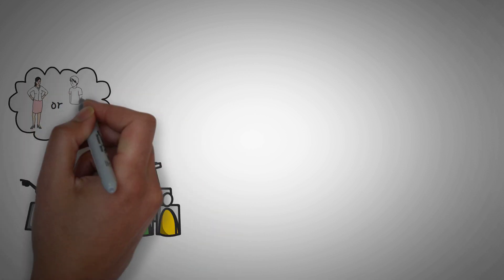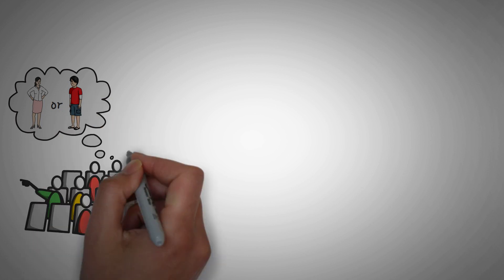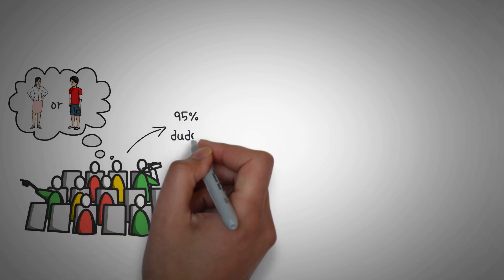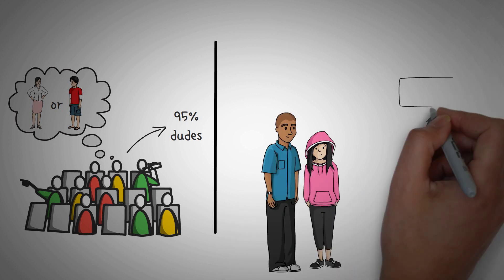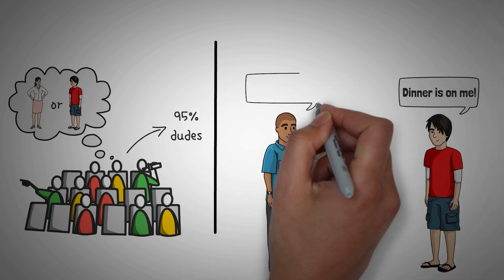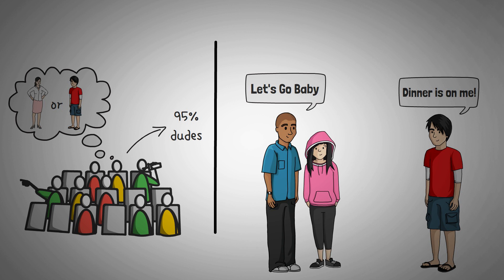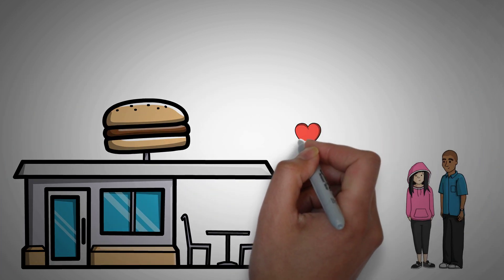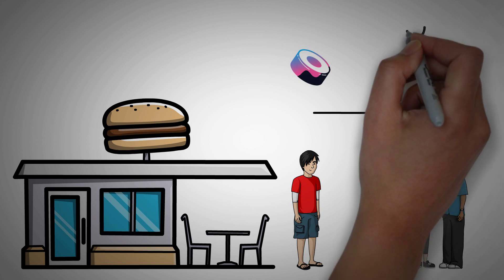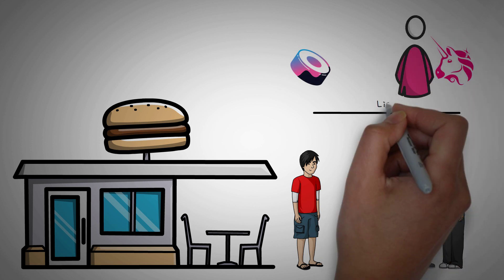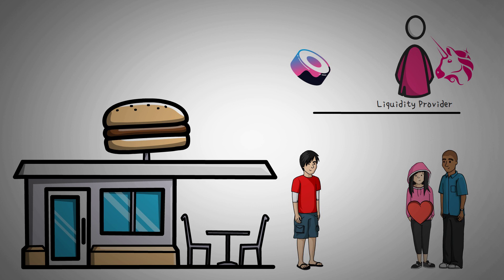Most of our audience has had a girlfriend or a boyfriend at one point or another. Since like 95% of our audience is dudes, let's say you just got a new girlfriend and your best friend wants to take both of you out to dinner. You don't see any harm, but you notice at dinner that he is sending signals to your girlfriend and basically flirting with her. This is a metaphor for what SushiSwap did to Uniswap — they flirted with Uniswap's liquidity providers.